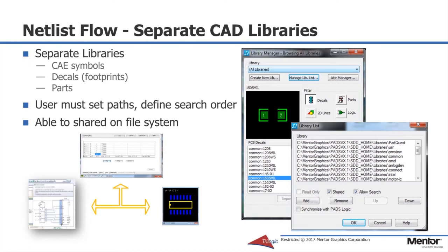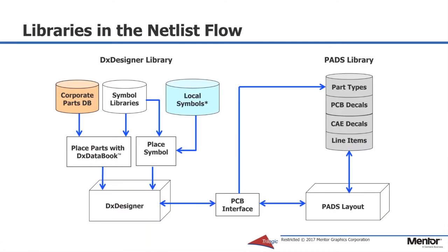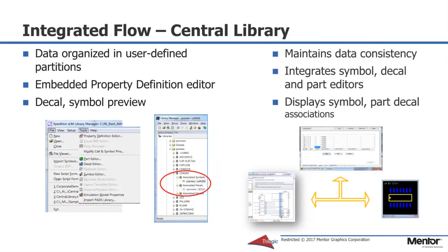We have two flows that are supported in the PADS environment. In the netless flow, there are separate libraries for the symbols and the footprints. The information about components and the connectivity is maintained either in the PADS layout library or the properties on the symbol as it is defined in the schematic, which allows automatic creation of a PADS part library. In PADS Designer, symbols are placed on a design and the other component information is added onto the symbols in the schematic from a corporate database. This is the data that makes a symbol into an actual component. Then the PADS part type can be automatically created referencing a separate decal library maintained in PADS layout and then loaded into the PADS library. For example: